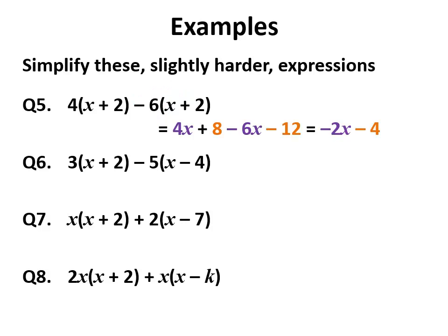Second one, pretty much the same except this time we've got to watch that we've got a minus 5, and there's a negative inside that second brackets. So 3 times x is 3x, 3 times 2 is 6. Minus 5 times x is minus 5x. Minus 5 times minus 4 is plus 20.